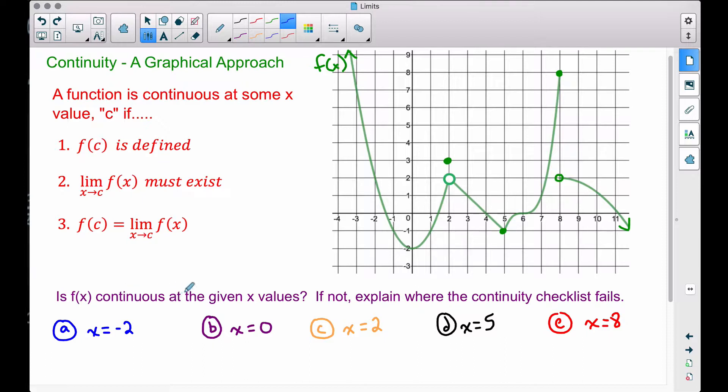Is f(x) continuous at the given x values? Let's go to where x is negative 2. So where x is negative 2, we're right here on the curve. If we just trace a line across there, we never have to pick up our pen. So it is continuous there.